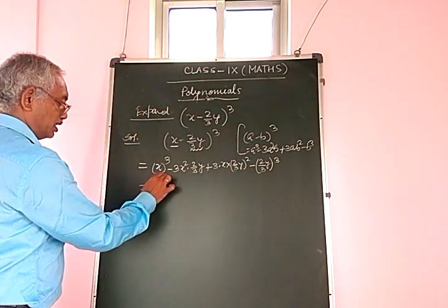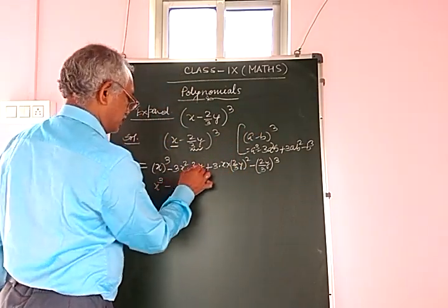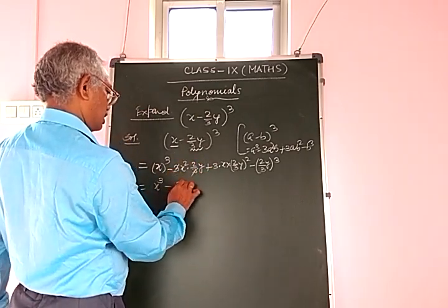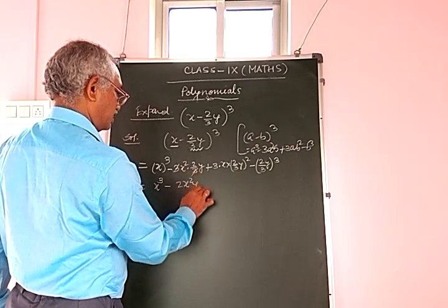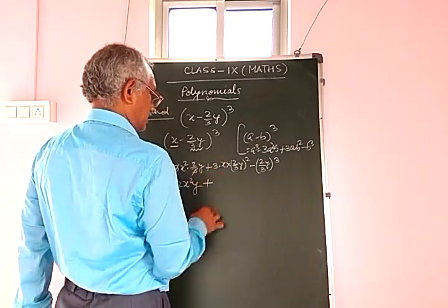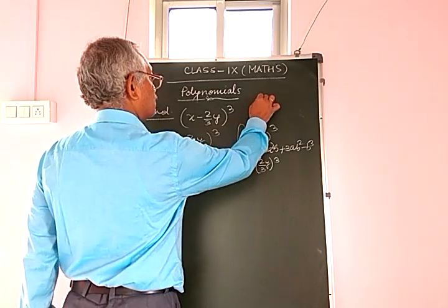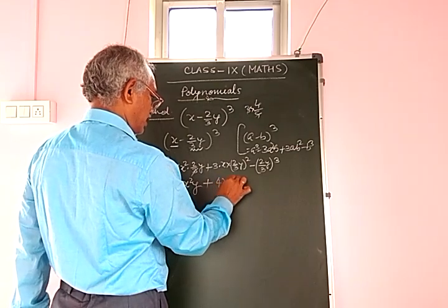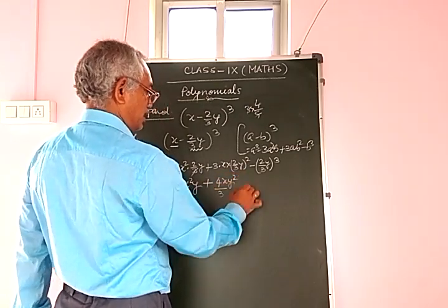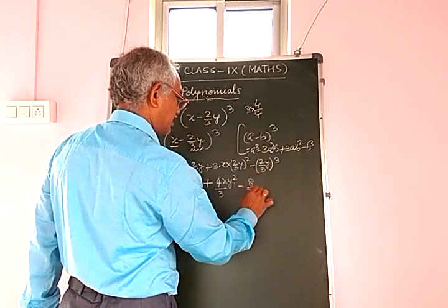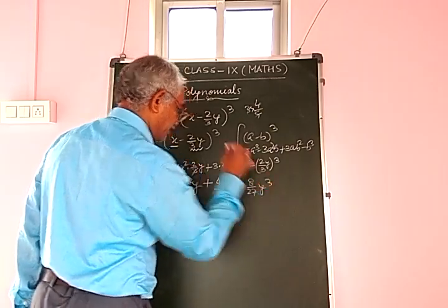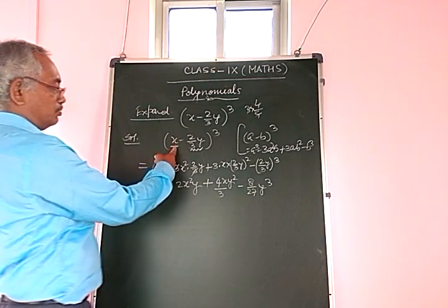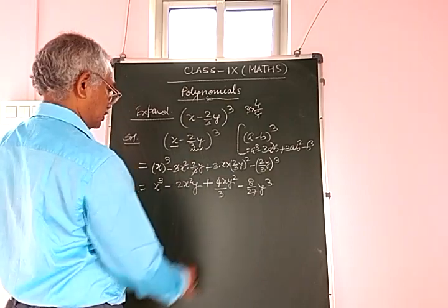This simplifies to x³ - 2x²y + (4/9)·3·xy² - (8/27)y³, giving the final expansion: x³ - 2x²y + (4/3)xy² - (8/27)y³.